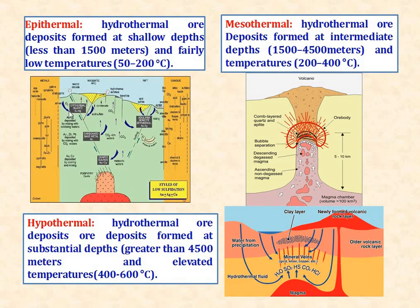Epithermal deposit is when a hydrothermal ore deposit forms at shallow depth, less than 1500 meters, and at fairly low temperatures of about 50 to 200 degrees Celsius. Mesothermal deposits are intermediate temperature and depth deposits, having depths of 1500 to 4500 meters and a temperature range of about 200 to 400 degrees Celsius. Hypothermal deposits are hydrothermal ore deposits formed at substantial depth greater than 4500 meters and elevated temperatures of about 400 to 600 degrees Celsius.